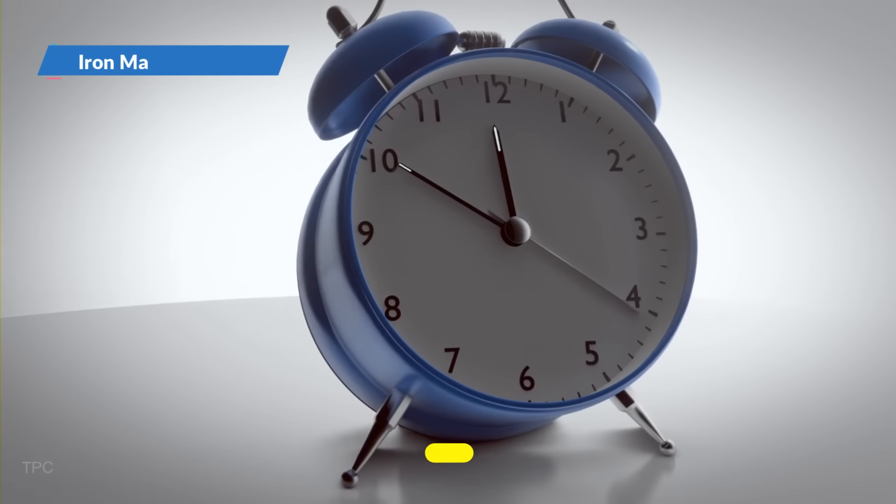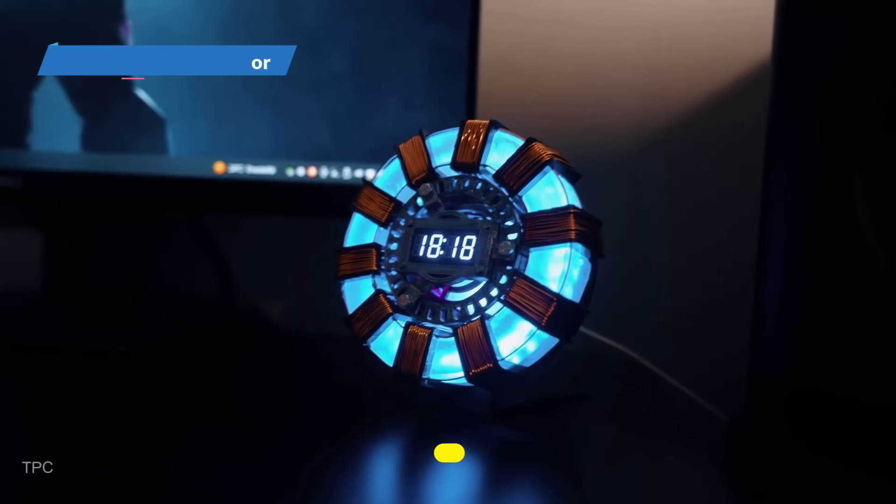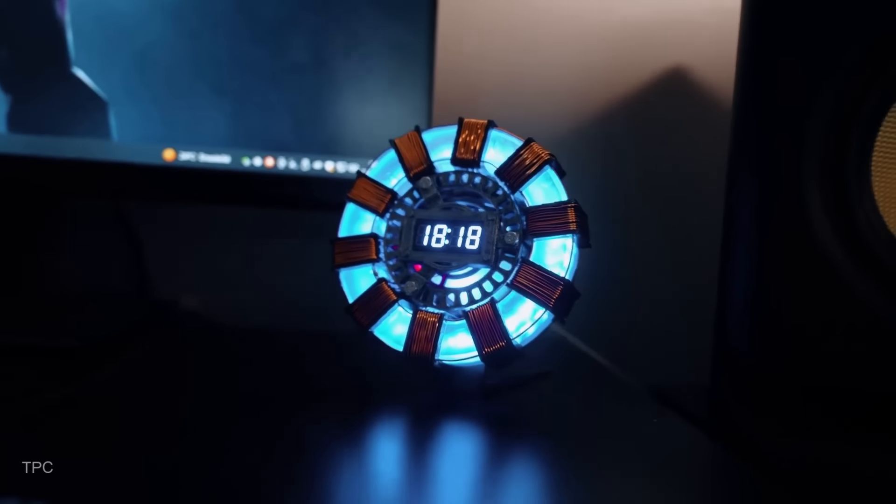Number 11. You've likely seen many types of clocks, but this arc-reactor-inspired clock is truly eye-catching. Every hour, a quick flash of light marks the time. JJ built this clock from scratch using an ESP32, some 3D-printed parts, LEDs, copper wire, and a display.